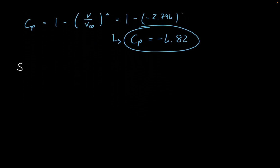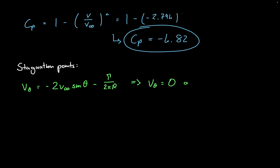The next step is to solve for the stagnation points. We write out our V theta in polar coordinates — we have a theta direction and an R direction. Taking our velocity from before and writing it in polar coordinates, V theta equals negative 2 V infinity sine theta minus gamma divided by 2 pi R. Since we're looking for stagnation points, velocity is zero for both V theta and V R, so V theta equals 0 at the stagnation point.